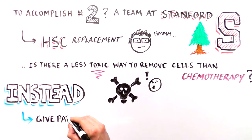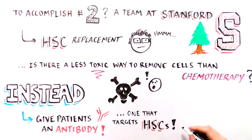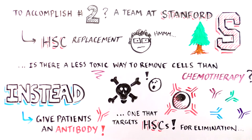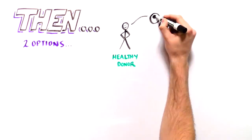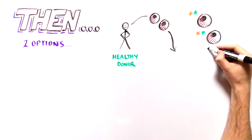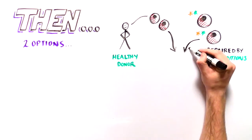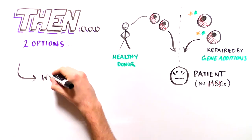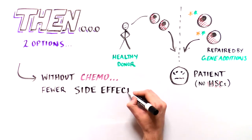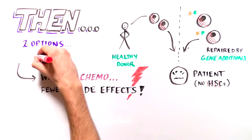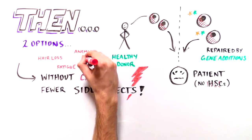Their method involves giving patients an antibody, which is a special protein that recognizes other proteins in a very specific manner. This particular antibody targets and eliminates HSCs from the body. Researchers can then transplant stem cells from a healthy person or HSCs repaired using gene addition back into the patient. By eliminating the need for chemotherapy before the healthy cells are transplanted, there will be fewer adverse side effects from this treatment.